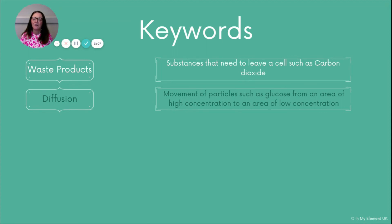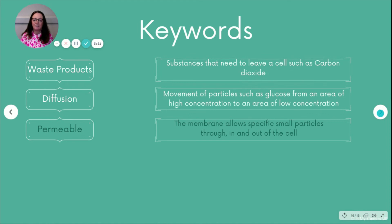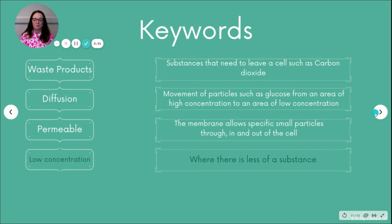You will need this keyword and definition at Key Stage 3 and Key Stage 4 — it's really important. 'Permeable' means the cell membrane allows specific small particles in and out of the cell. We also talked about low concentration, which is where there is less of a substance.